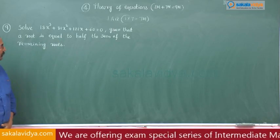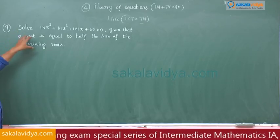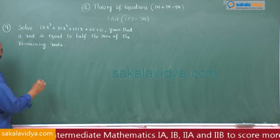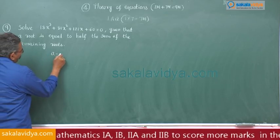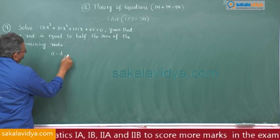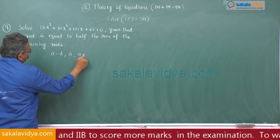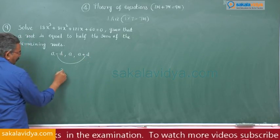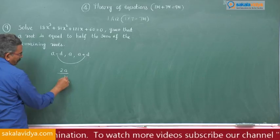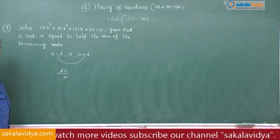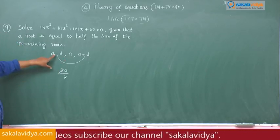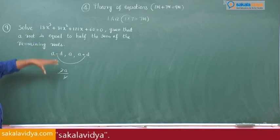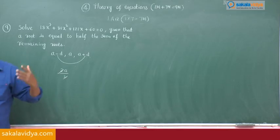Now, a root is equal to half of the sum of the remaining roots. For example, if you take a-d, a, a+d, the sum of the remaining two roots is 2a, and half of that is a. So that means the roots are in arithmetic progression only.